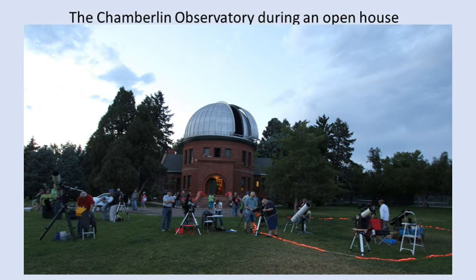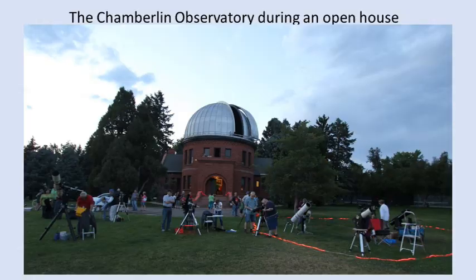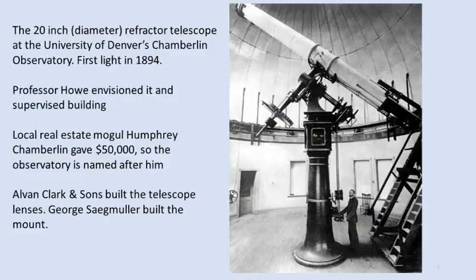The Chamberlain Observatory is in University Park and is owned by the University of Denver. Inside is a 20-inch refractor telescope which saw first light in 1894. Professor Herbert Howe envisioned it, supervised its building, but real estate mogul Humphrey Chamberlain came up with the $50,000, so it's named after him.